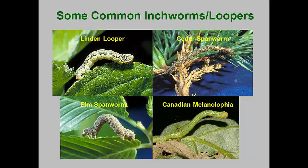This concludes our module on leaf-eating and defoliating caterpillars and sawflies. I have only presented a few examples of these pests, as there are hundreds of species that can be found in our landscapes. Fortunately, most rarely pose a significant risk to the health of our landscape plants, and most are easily controlled with biological controls, bio-based insecticides, and many of the synthetic insecticides.